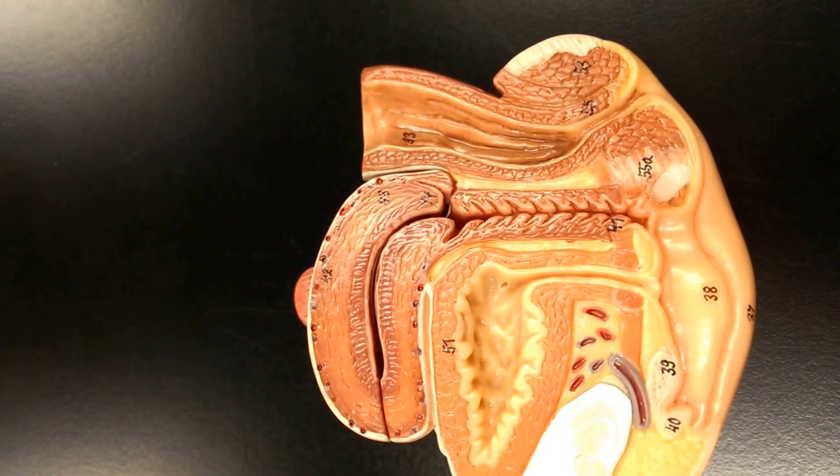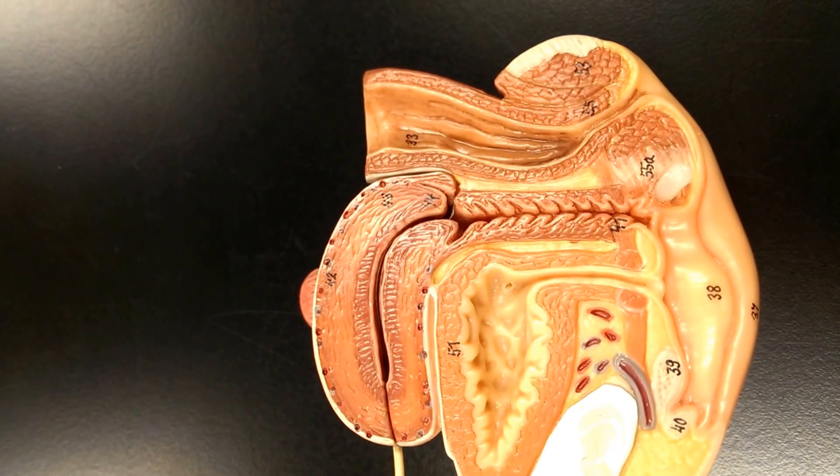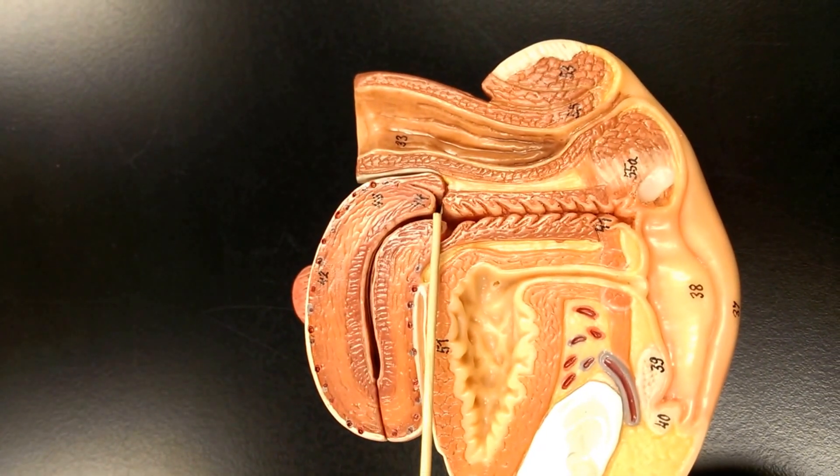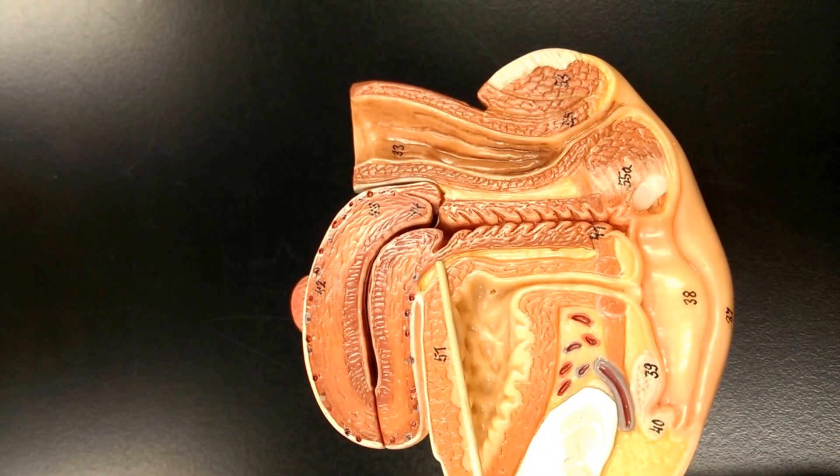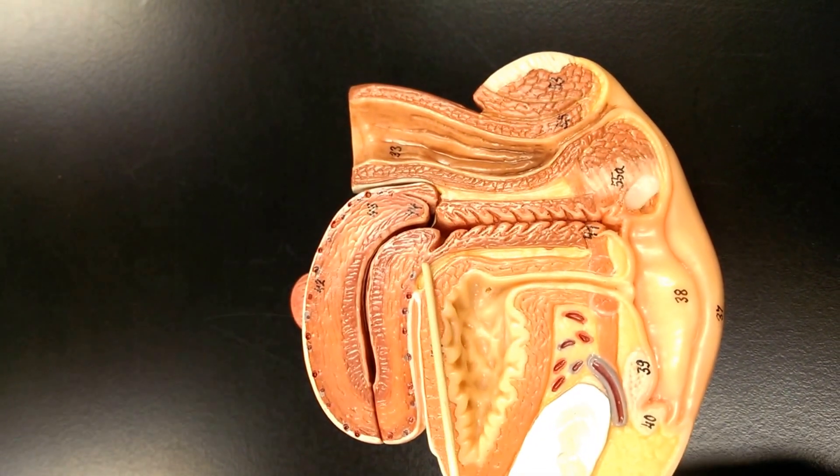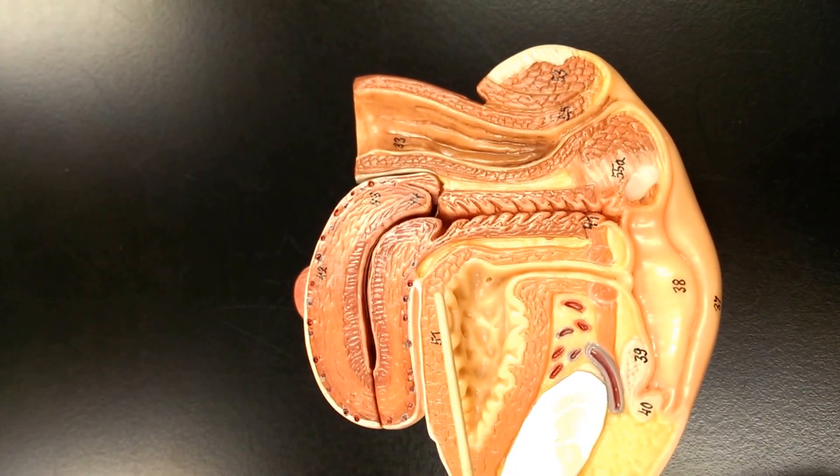I can see the bladder and above it, the uterus with a fundus, body, and cervix. I see the vagina and then the fornix, which is the part of the vagina that surrounds the cervix.